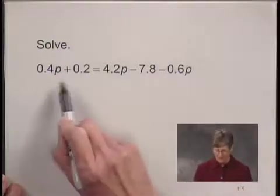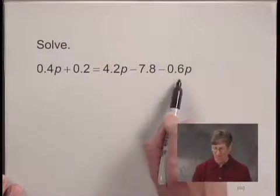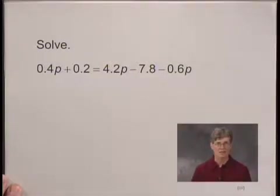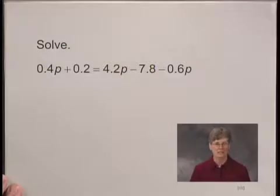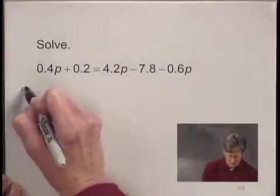We see that each of these decimal expressions has just one decimal place. So if I multiply on both sides by 10, I will clear the decimals. And let's do that.